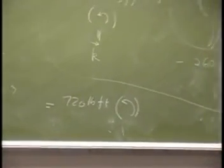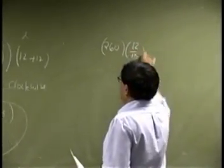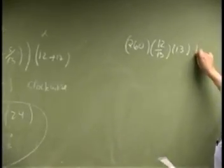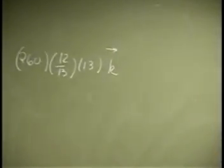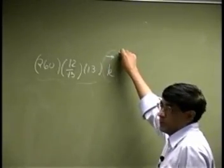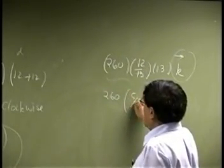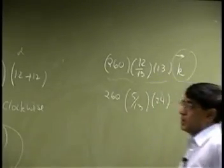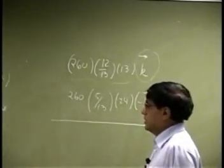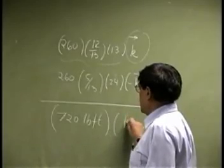Just because people usually have problem with this, this could have been written as 260, 12/13 and then you had 13 times K. If you really want to get down to the actual vectors, then the first moment was this being the magnitude and that being the direction. The second one here was 260, 5/13, 24 and the direction was negative K. You can add these two, you are going to get the same thing as 720 pound feet, that is being magnitude times K.